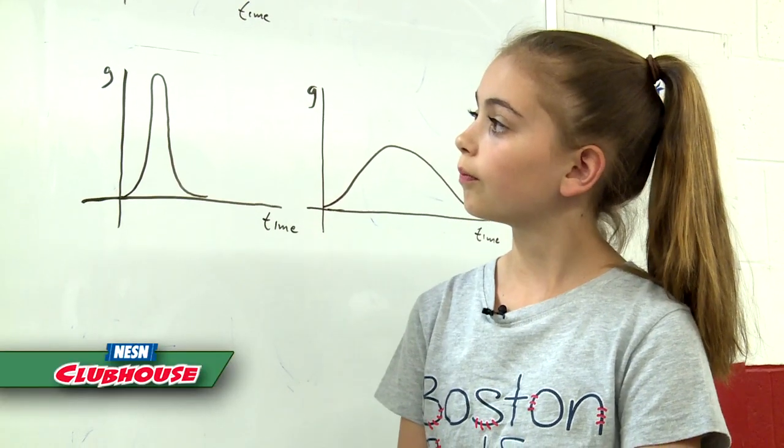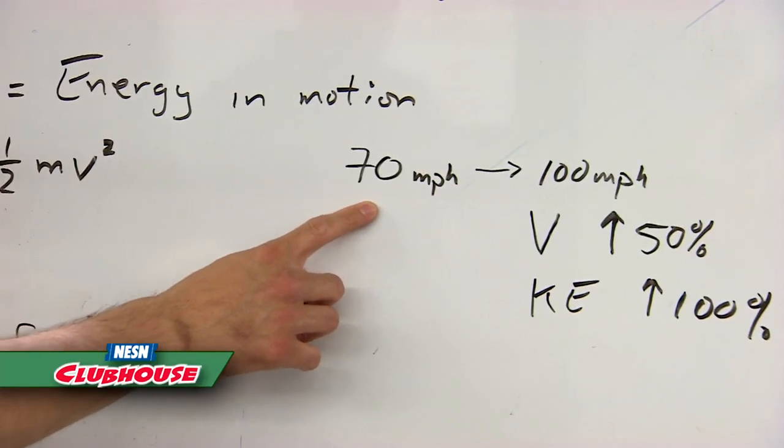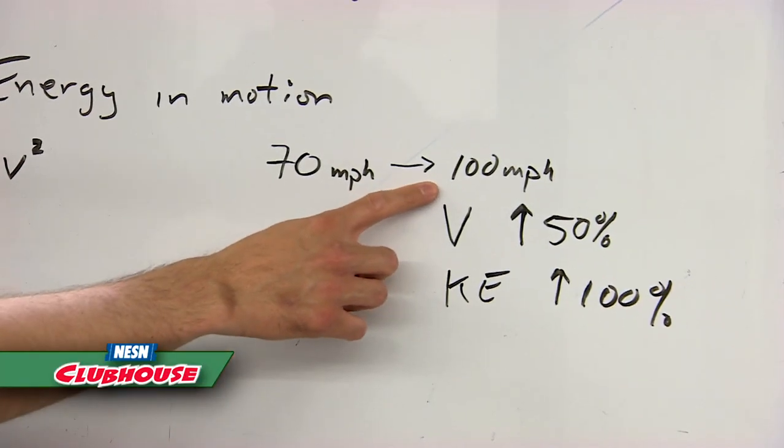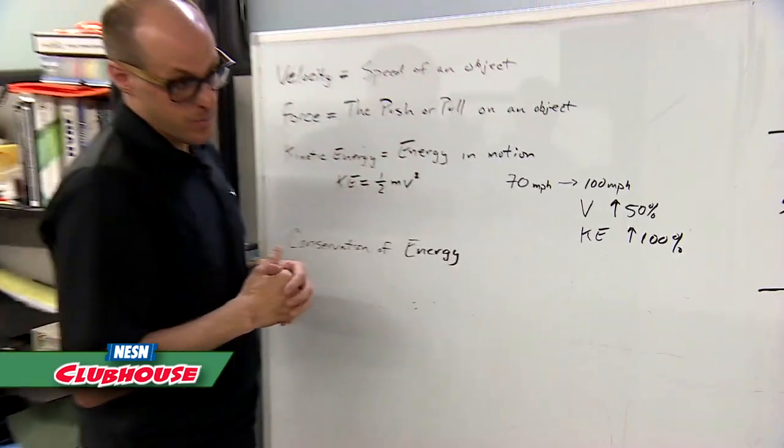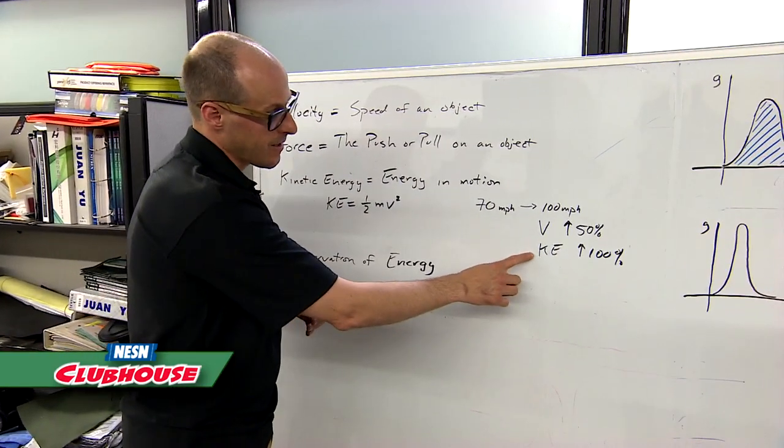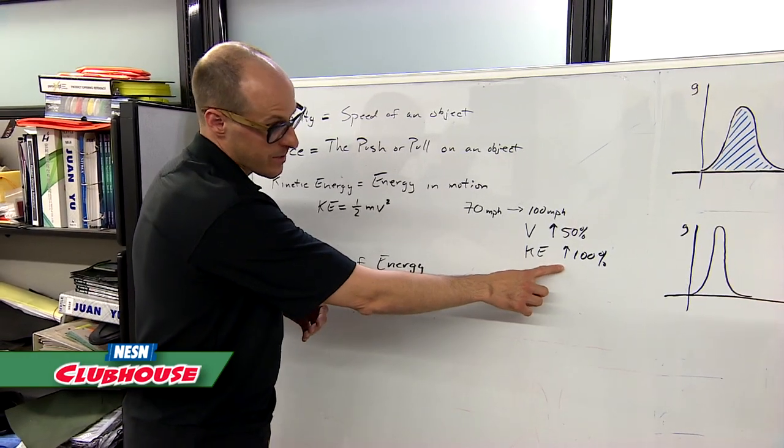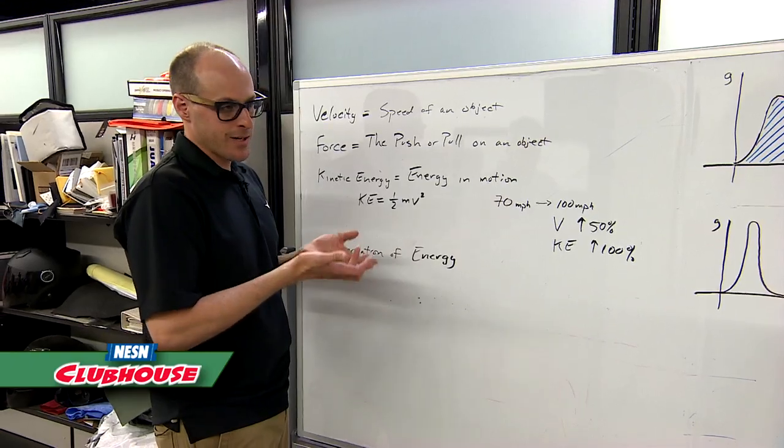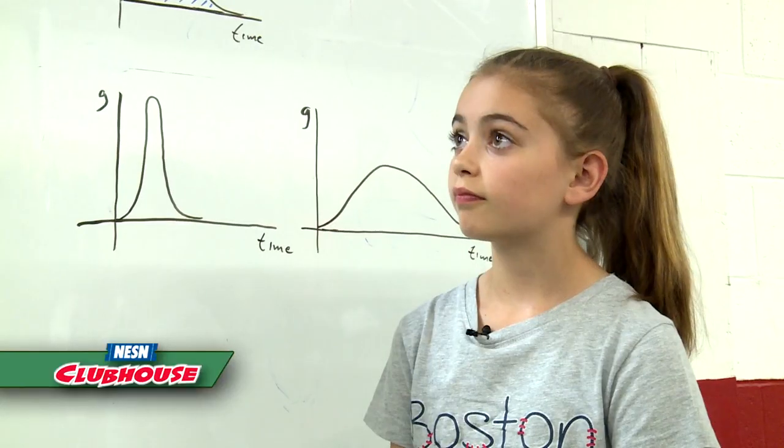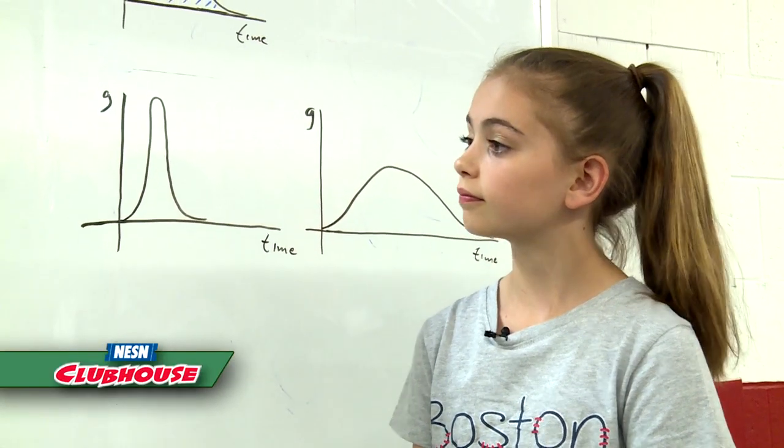That's important because if you think about someone who's throwing 70 miles per hour, if you go from 70 miles per hour to someone who's throwing 100 miles per hour, your velocity goes up by 50%, but the kinetic energy goes up by almost 100% - it basically almost doubles. So just that somewhat small 50% increase in velocity has a really big effect on the energy.